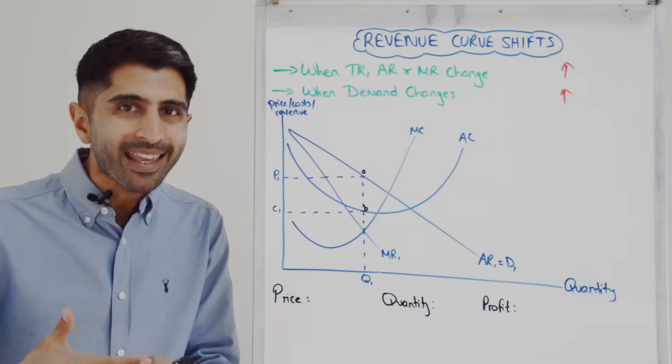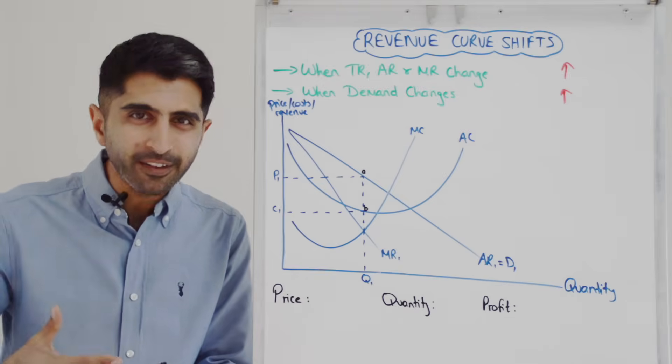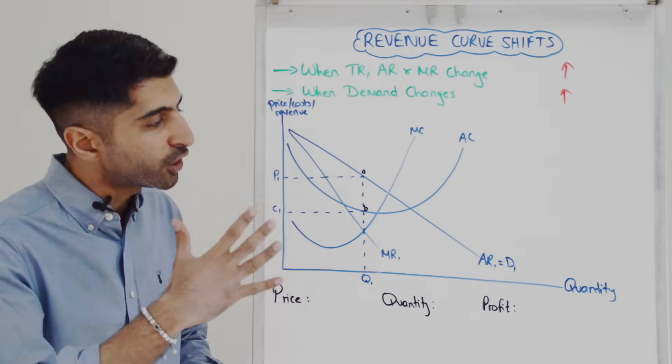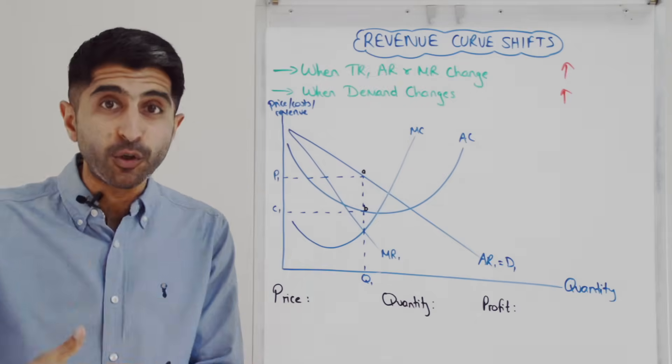So yes, let's take an example of revenue increasing or demand increasing for a firm. How would you show that? You would show that by shifting these revenue curves to the right.